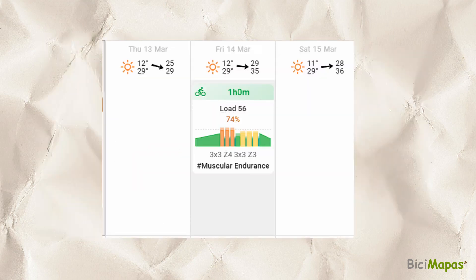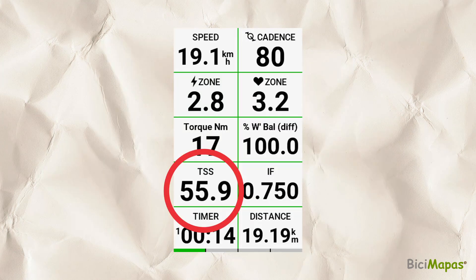Finally, once the workout is finished and if you followed it as intended, the load shall be within what was estimated by Intervals.ICU. For this workout it was estimated at 56 points and the actual session TSS was 55.9, meaning the training intent was met.